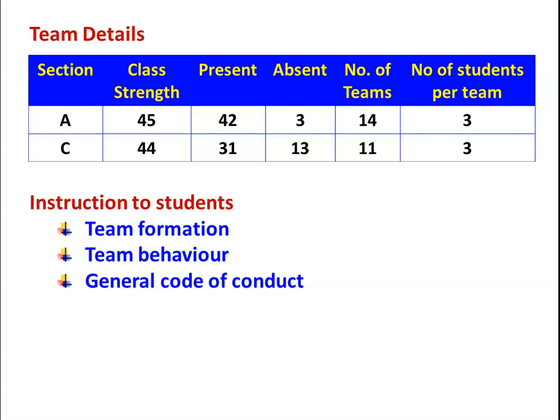For every team, I allotted a table where they can place 3 chairs and sit. After informing them, the students came and I allotted tables to all 25 teams. After that, I visited all the teams and adjusted the student composition — ensuring that if all 3 members were above average or all below average, I adjusted so that each team had at least one above average student, for better learning.